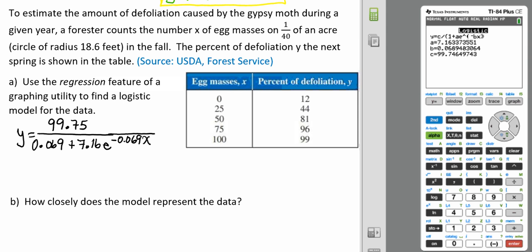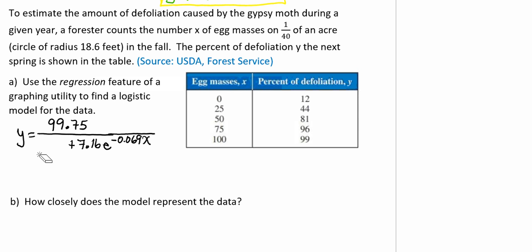Actually, if we just double check that really fast. Oh, yep, that should be a 1. That's what I thought. So this value right here should be a 1. So 1 plus A times E raised to the negative BX.